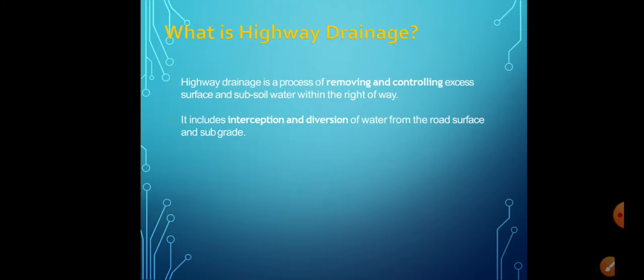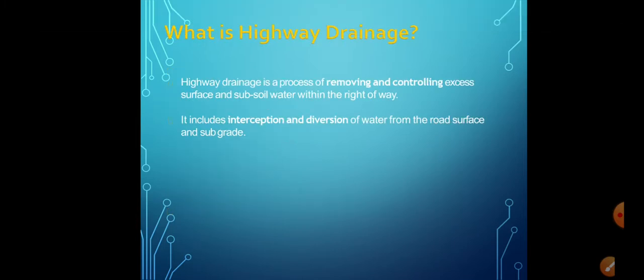Today we want to see all these contents. Highway drainage is the process of removing and controlling the excess surface and subsoil water within the right of way. It includes interception and diversion of water from the road surface and the subgrade.